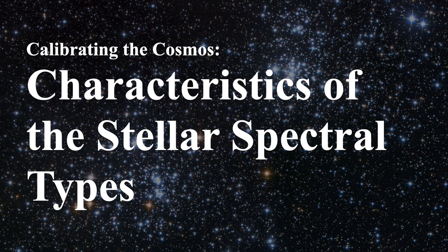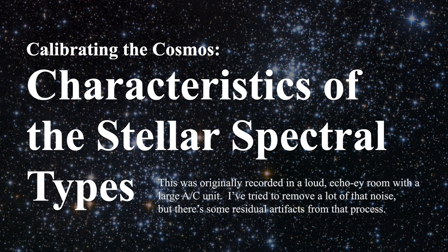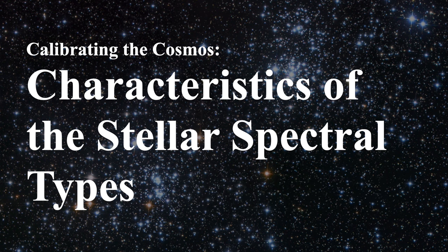Hello, this is Jason Kendall. Welcome to the next of my introductory astronomy lectures. Today we're going to finally get into some aspects of astronomy that have been around us for a long time, and that is the nature of the spectra of stars — the stellar spectral types and how we interpret their spectra. That's the beginning of the understanding of the nature of what stars are.